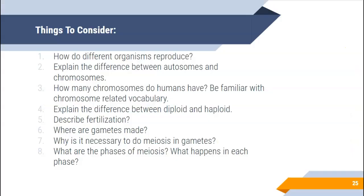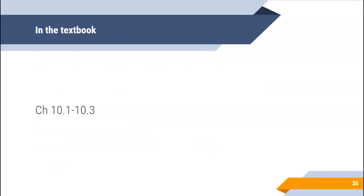In males, the process produces four sperm. In females, this whole process still happens, but the egg needs a lot of nutrients to sustain the zygote in early development. Instead of making four eggs, the female body only puts energy into making one — the egg — and the other three dissolve and go away. So females make way fewer eggs than males make sperm: for every one process of meiosis, a female makes one egg and a male makes four sperm. We will be modeling this in class to help wrap your head around the vocabulary and chromosome movements. We are in chapter 10.